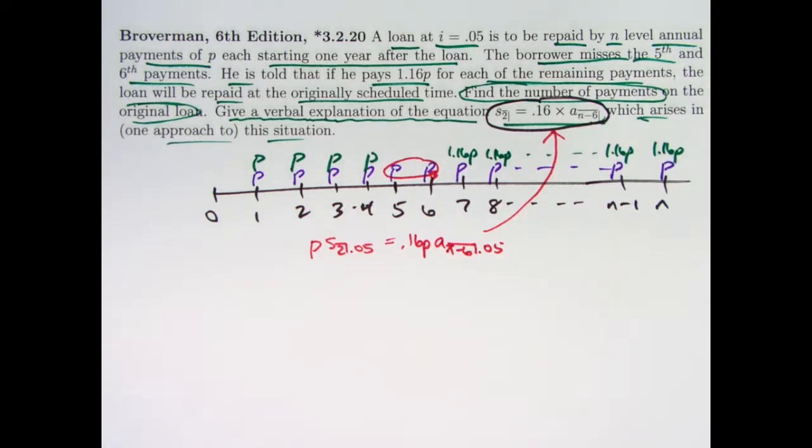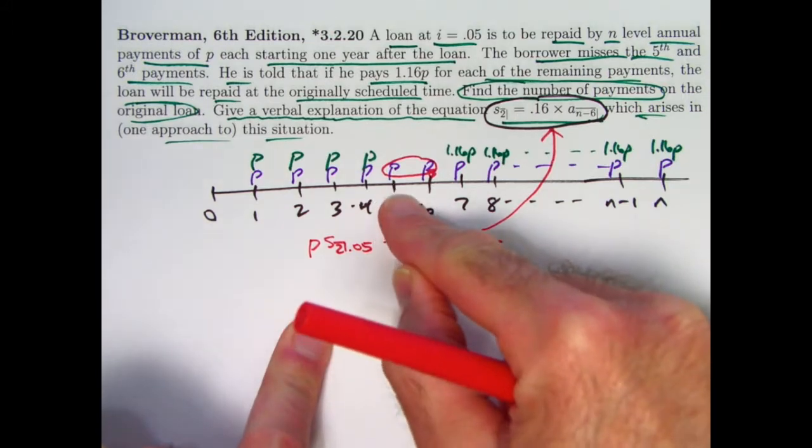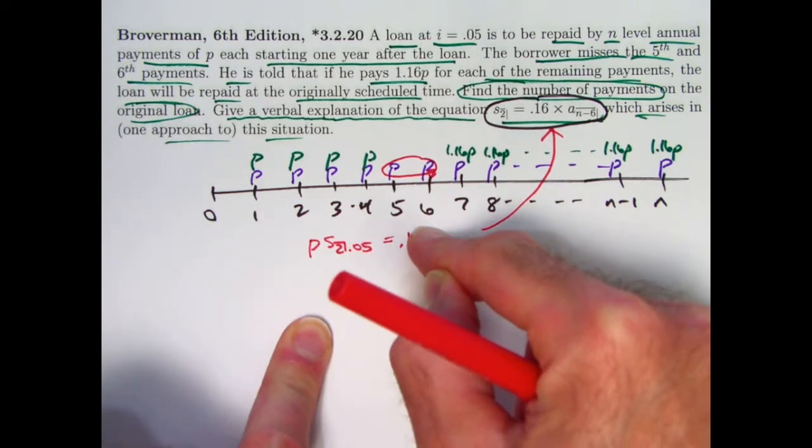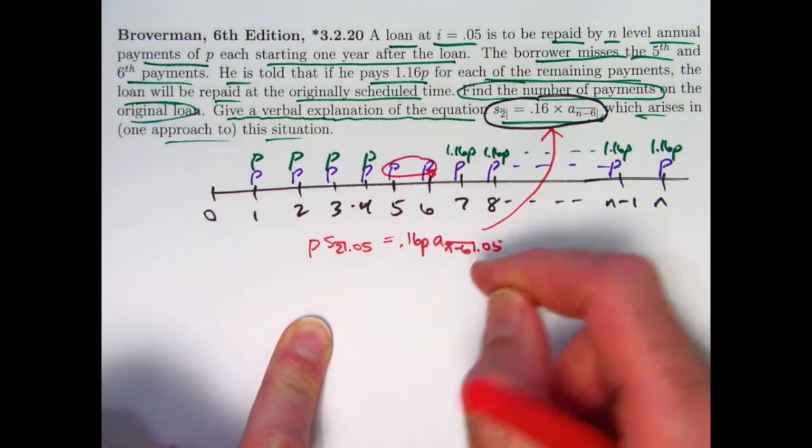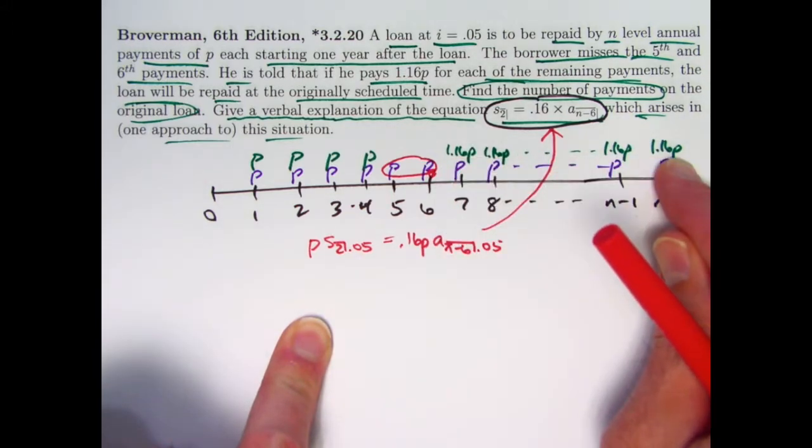And if we cancel the P's in this equation, we get to what they have here. So I think that's probably the way they want you to interpret it, with the P's in here at least.